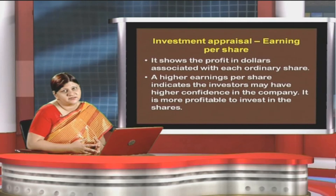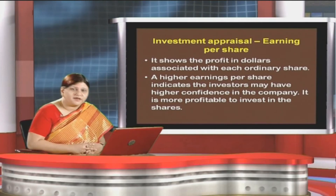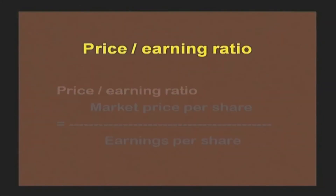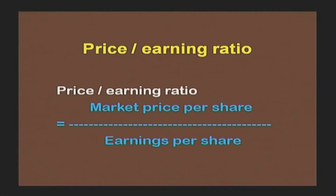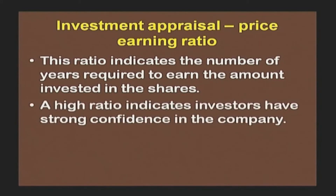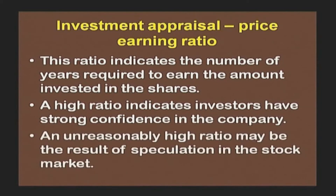Profits are averaged out by the number of shares, so if EPS is on a higher side, investors will be happier to receive dividends on a higher side. The formula for price-earnings ratio is market price per share divided by earnings per share. This ratio indicates the number of years required to earn the amount invested in the shares. A higher ratio indicates investors have strong confidence in the company, though an unreasonably high ratio may be the result of speculation in the stock market.